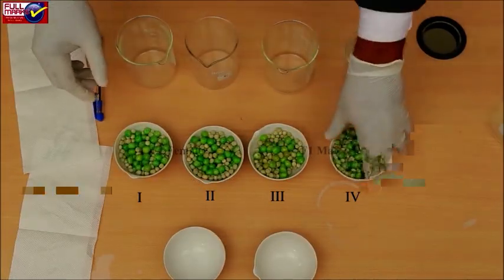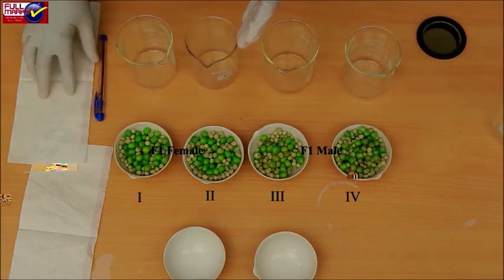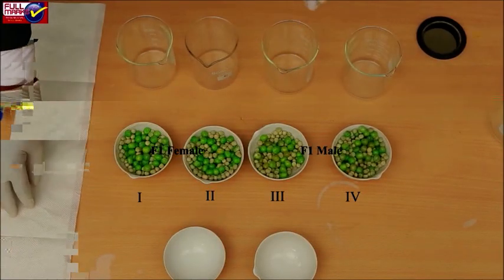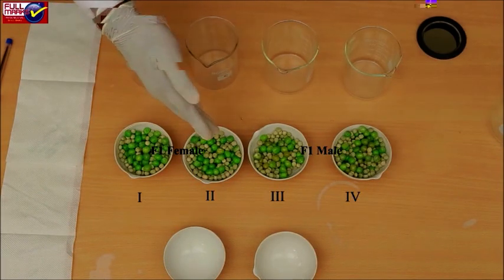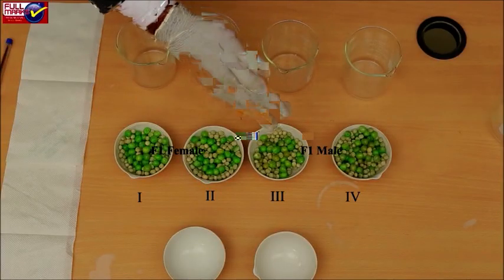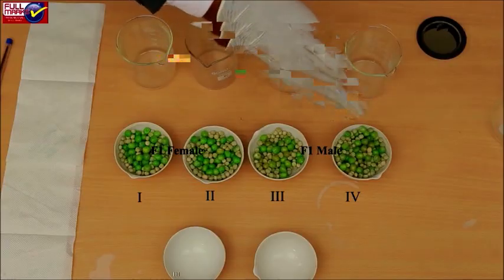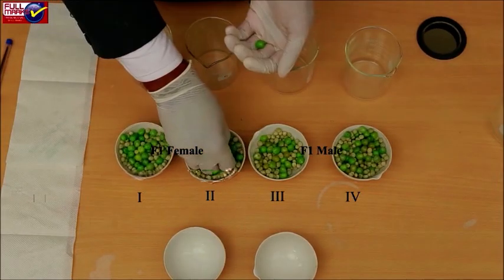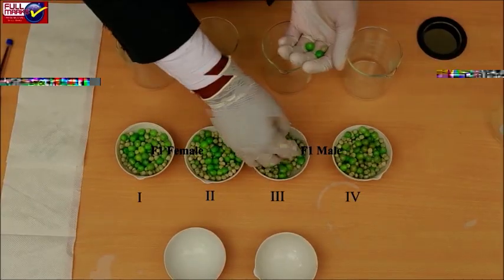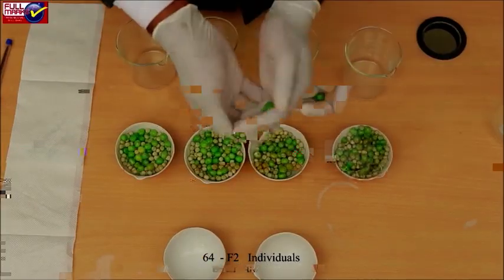In order to raise the F2 generation, pick up one seed from beaker 1 of female and one seed from beaker 3 of male and put into the palm of the partner student. Similarly pick up one seed each from beaker 2 of female and beaker 4 of male to put in the palm of the partner. This partner would now keep all 4 seeds together. Continue this process till all seeds are utilized. At the end, 64 F2 individuals each represented by a 4-seed cluster are obtained.